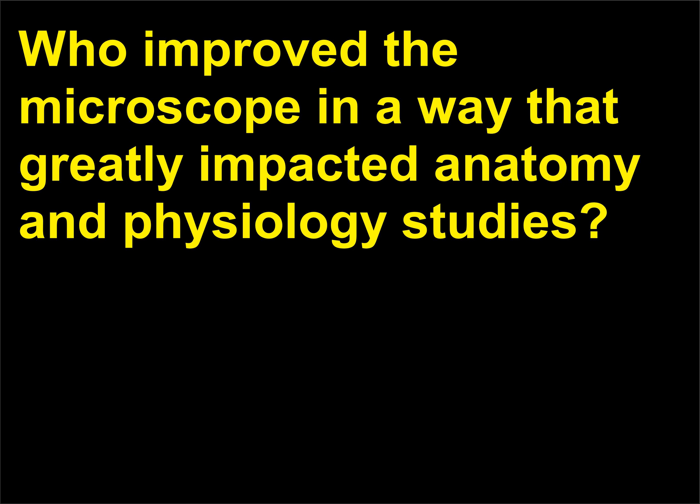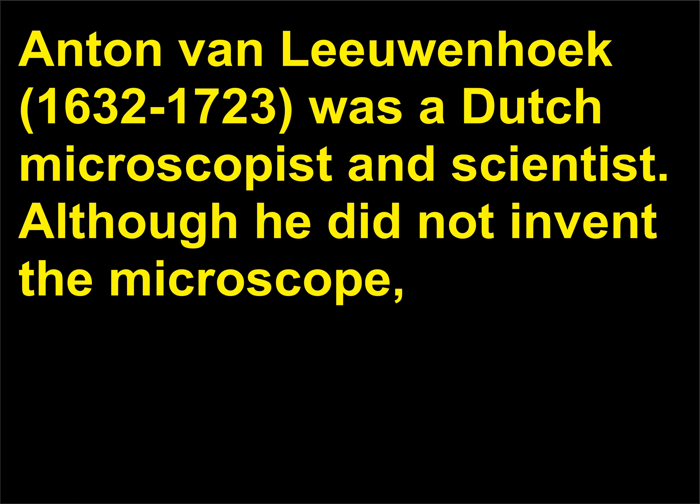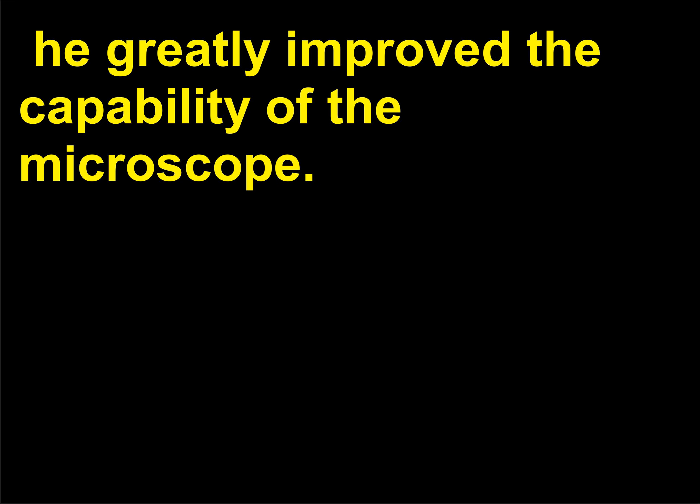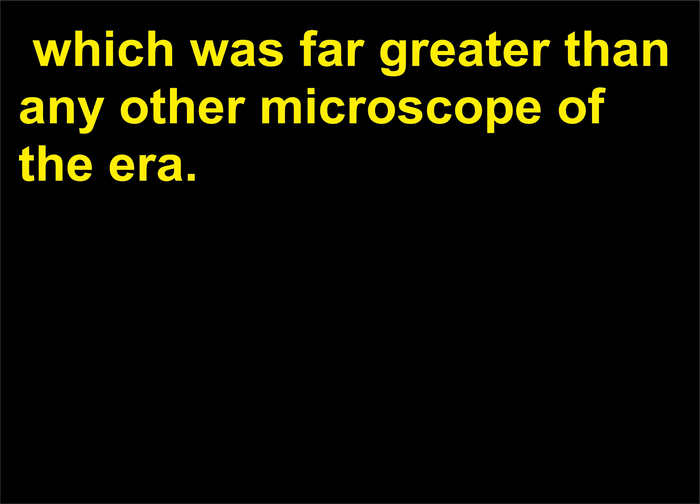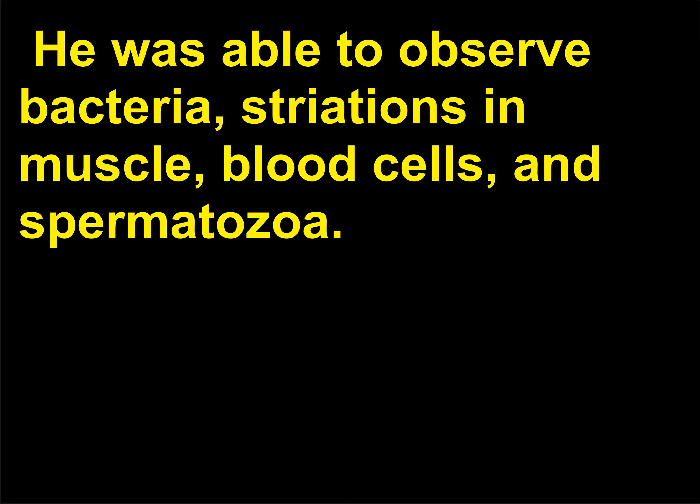Who improved the microscope in a way that greatly impacted anatomy and physiology studies? Anton van Leeuwenhoek, 1632-1723, was a Dutch microscopist and scientist. Although he did not invent the microscope, he greatly improved the capability of the microscope. His expert skill in grinding lenses achieved a magnification of 270 times, which was far greater than any other microscope of the era. He was able to observe bacteria, striations in muscle, blood cells, and spermatozoa.